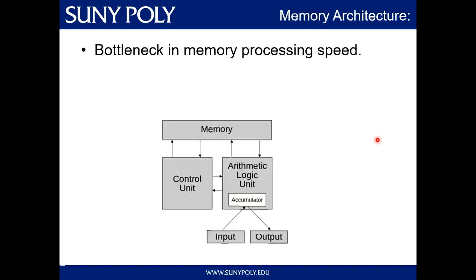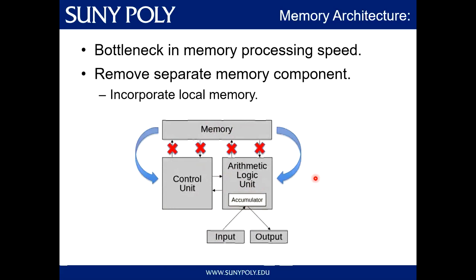One of the bottlenecks we're currently facing is in our memory processing scheme. This input of a stop sign needs to go into the processing unit, and during the processing of finding out if it's a stop sign, it needs to collect data from memory. This interchange between the processing unit and memory is a large lag time because they're in separate regions. One thing we can do is remove memory as a separate component and incorporate local memory at the processing unit for a much shorter lag time.